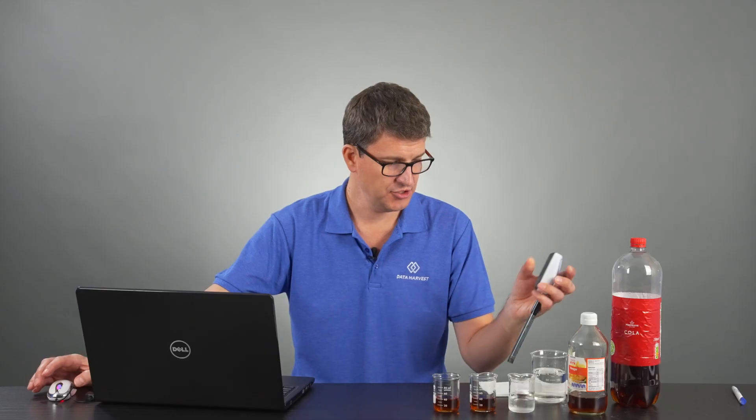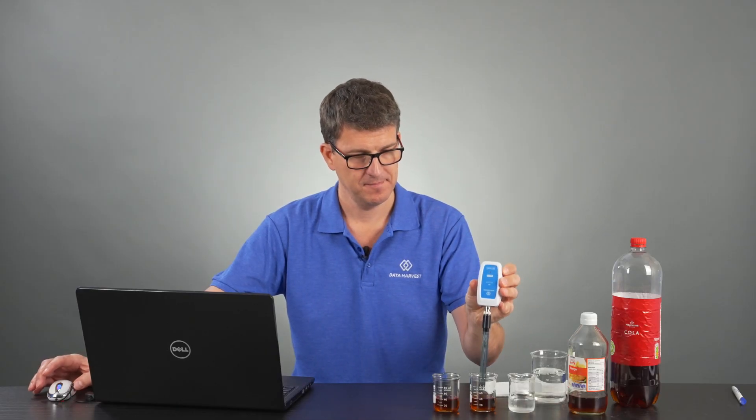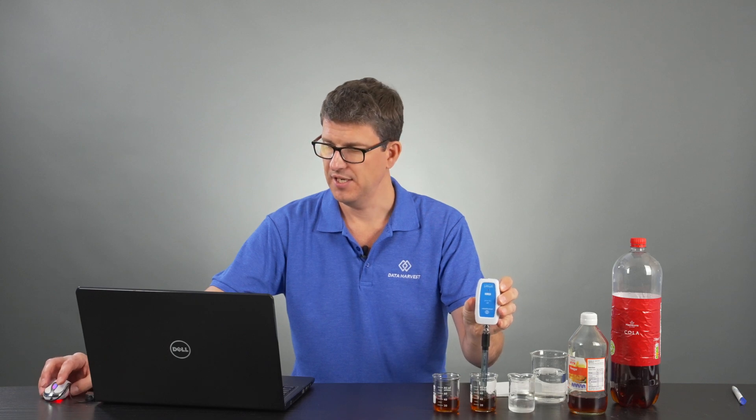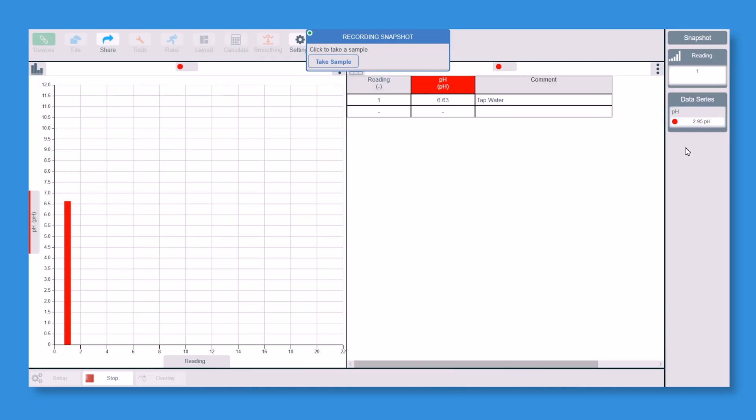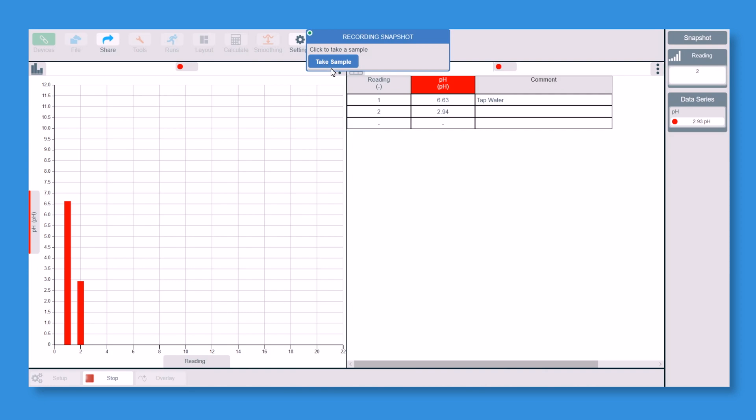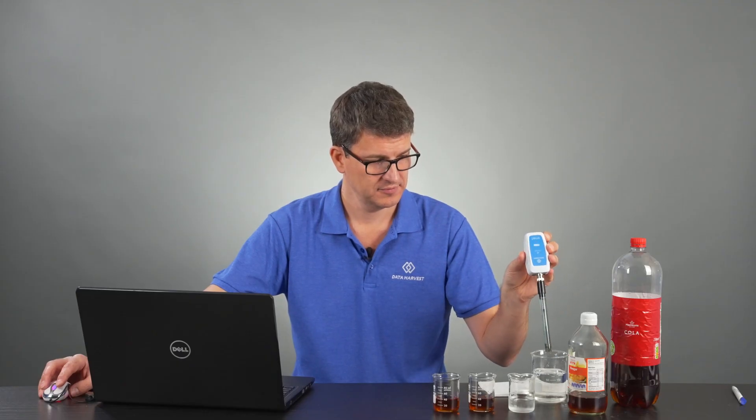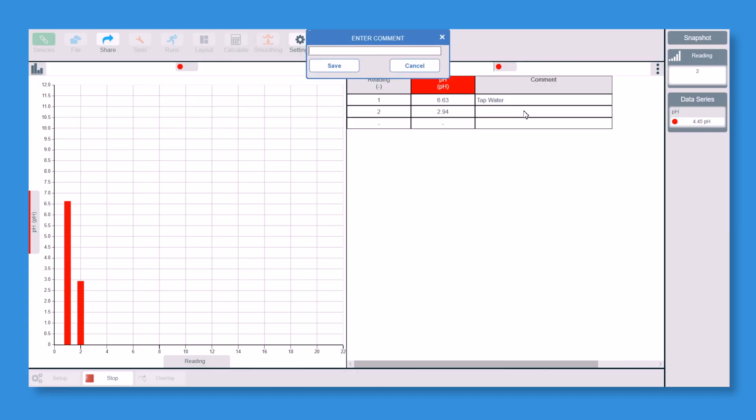We now go to the next solution which is vinegar. So you can see the live reading on the right hand side, 2.9, that's quite good. How different will it be to Coca-Cola? We shall soon find out. So there you go, that's gone down really quick. That's brilliant. So that's on there. So again, wash it. So we can now type vinegar.